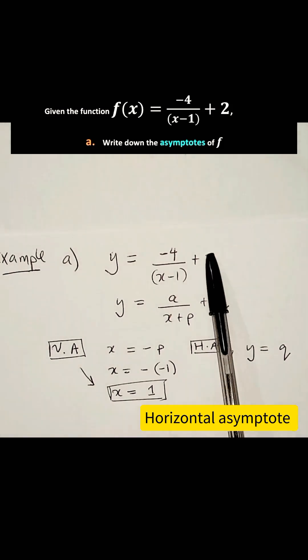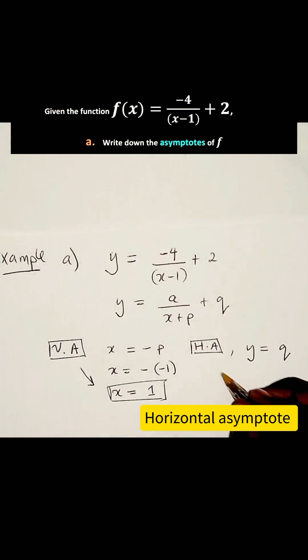And if you compare these two, you realize that Q is 2. Then we say the horizontal asymptote is given by Y is equal to 2.